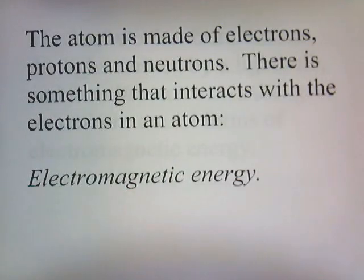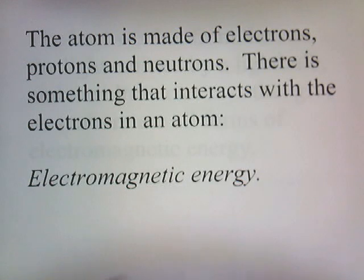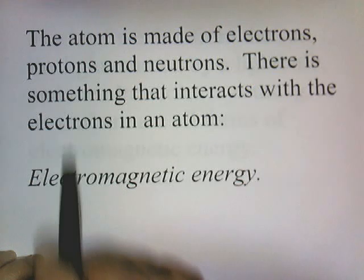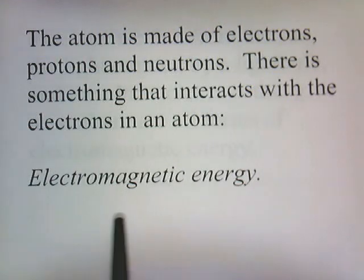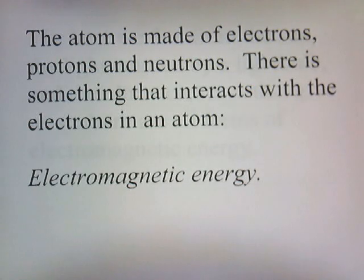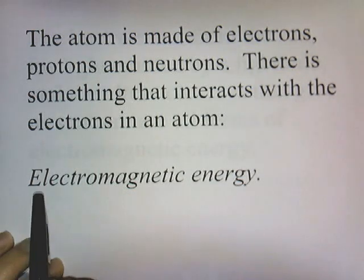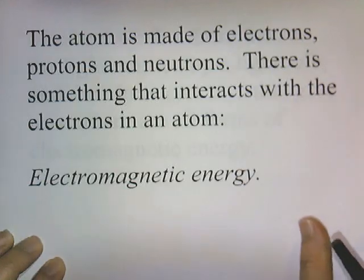The atom is made of electrons, protons, and neutrons. There's something that interacts with the electrons in an atom — it's electromagnetic energy that interacts with the electrons. They also interact with the protons and neutrons in different ways, but we're going to focus on how electromagnetic energy interacts with the electrons in a future lecture. First, we have to talk about what electromagnetic energy is.